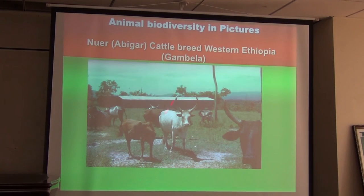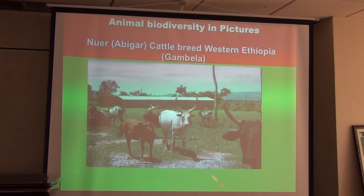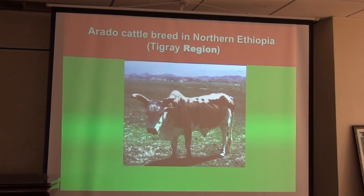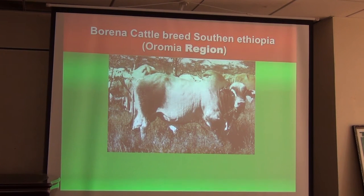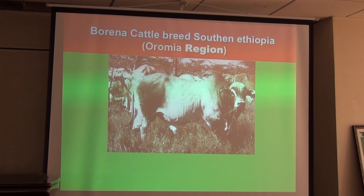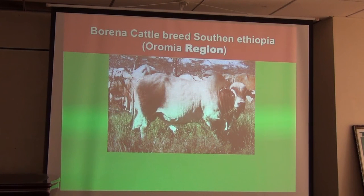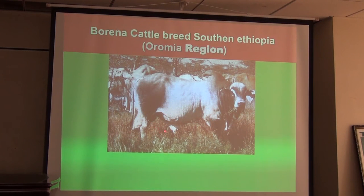To show some of this diversity in breeds and species: the Nuer or Abigar cattle breed is found in western Ethiopia, Gambela region. The Arado breed is found in South Ethiopia, Oromia region. The Boran breed was developed in the Borana area and has since been improved in Kenya and Australia — so the source of that breed is ours.